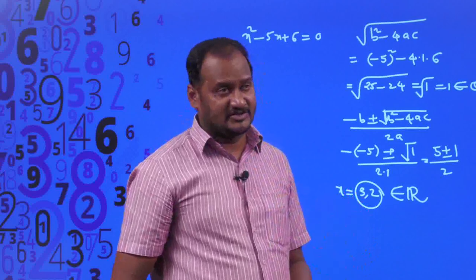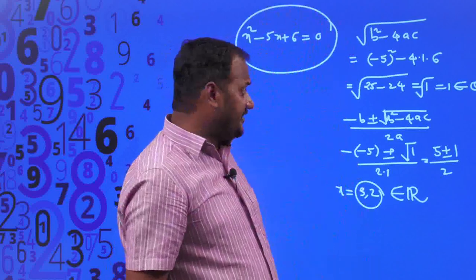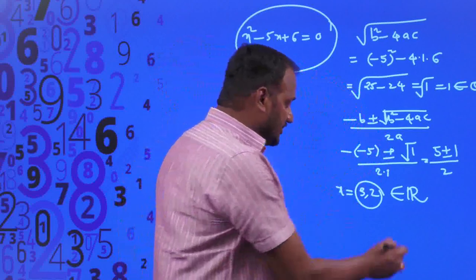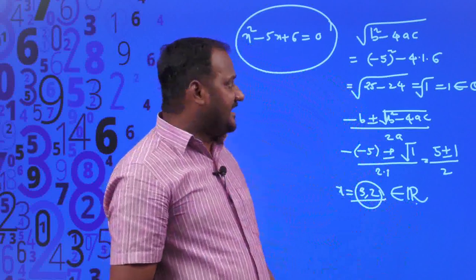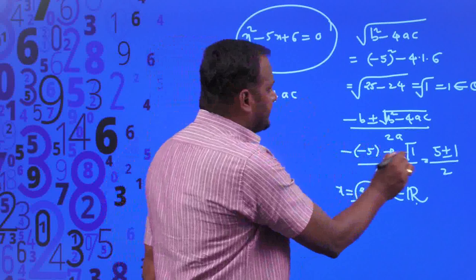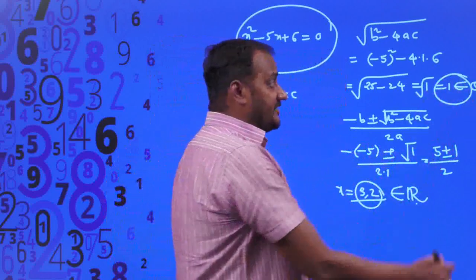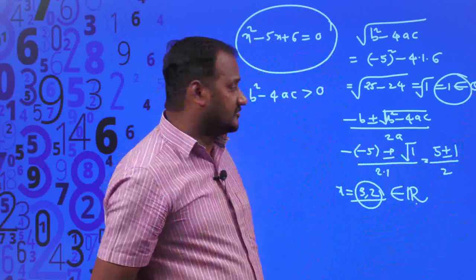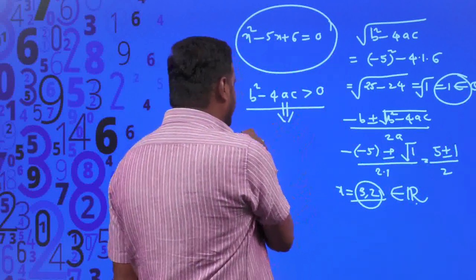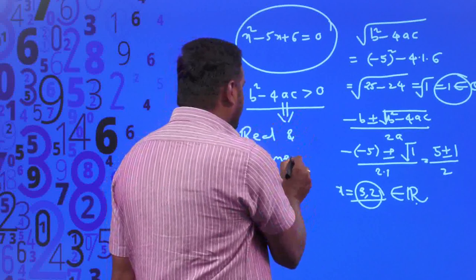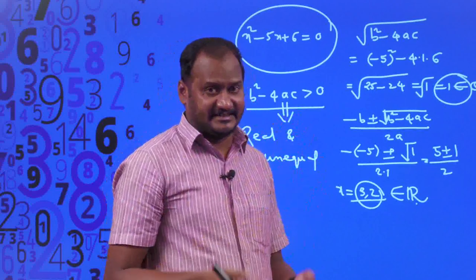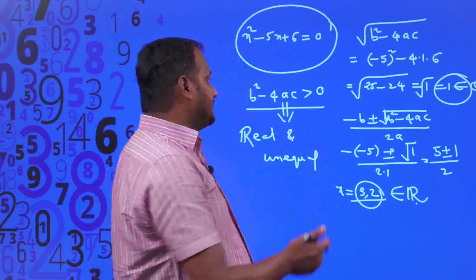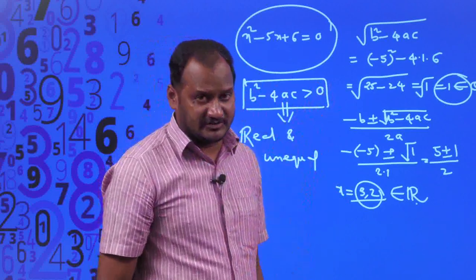The roots 3 and 2 are purely real numbers, and they are not equal — they are different. So we can conclude: if the value of B² - 4AC is positive (greater than 0), the roots of the quadratic equation are real and unequal, also called real and distinct or real and different.